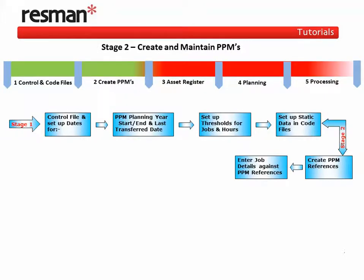Stage 2 covers the creation of our PPMs and this is located in the Work section. We create our PPM references and then we add work content to them as PPM jobs or tasks. We can have as many jobs for a PPM reference as we wish, and this also covers flexible calendar frequencies.